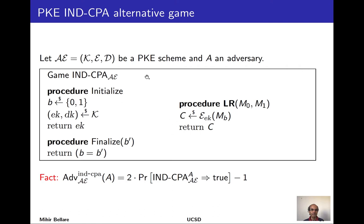When we studied symmetric encryption, we saw it was useful for proofs to formulate the IND-CPA advantage not through two games and a difference in probabilities, but through a single game. This alternative formulation more directly captures the intuition of trying to guess which world you're in, and it's useful to also give that formulation in the public key setting.